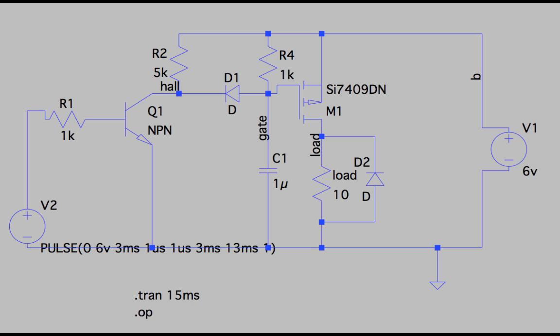When the hall effect sensor turns off this point here returns back to five volts but I don't want my gate to go straight back up to five volts which is why I have the diode here separating this point from this point. Instead the capacitor and the resistor form a timing circuit and depending on the potentiometer which is what R4 is depends on how long the MOSFET will stay on after the hall effect sensor has turned off.